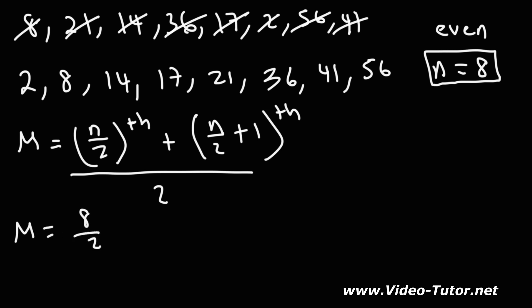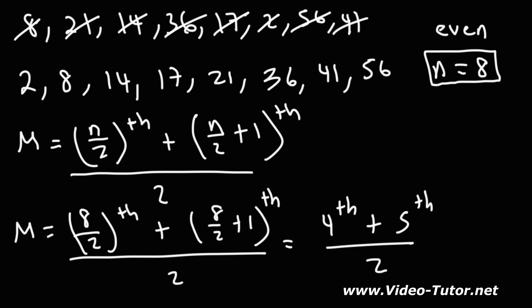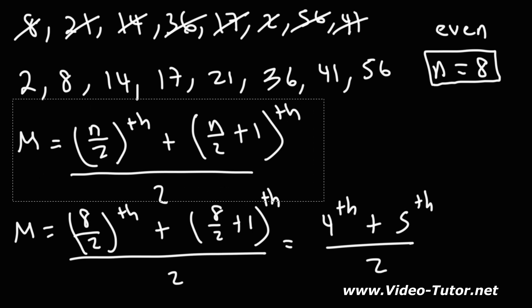So n is 8, this is going to be 8 over 2, and then 8 over 2 plus 1 over 2. So 8 over 2 is 4. This is the value of the fourth term. 8 over 2 plus 1, that's 4 plus 1, that's 5. So what we're really doing is we're averaging the values of the fourth and the fifth term. So the median is going to be the average of the fourth term and the fifth term for this particular example.